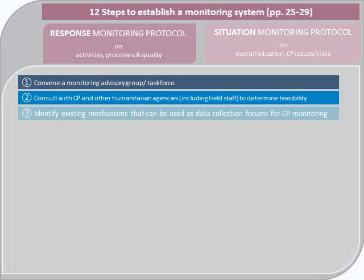When discussing with different humanitarian and child protection actors, it's important to ask what data collection mechanisms exist so you don't duplicate things. The next step is to decide on and adapt methodologies for situation and response monitoring. It would be important to consider the multiple options presented in the toolkit, but also keep an open mind — the solution for your specific context may be a combination of different methodologies, or even a different methodology you come up with within your context. Most of the methodologies recommended have been tested in different contexts and we know they work, though not necessarily in every single context.